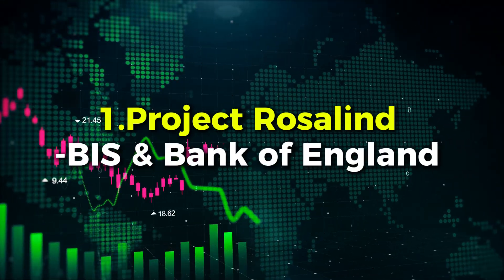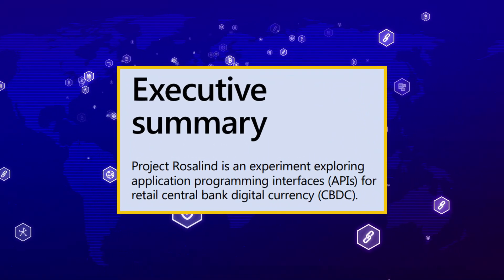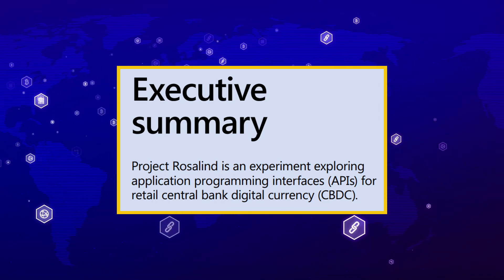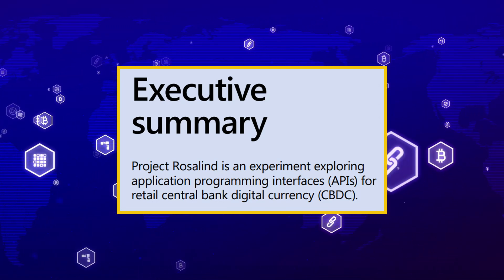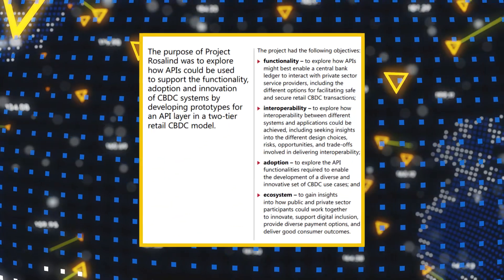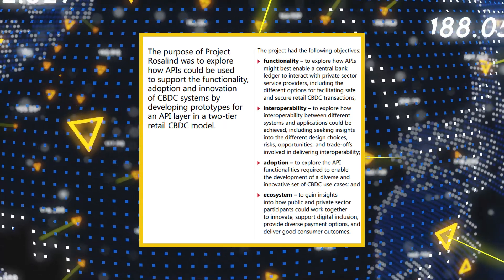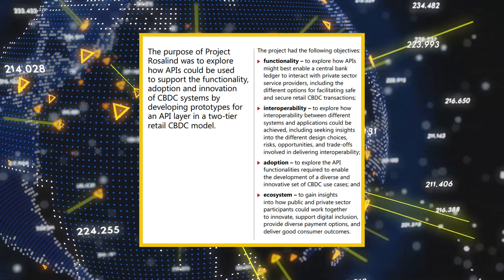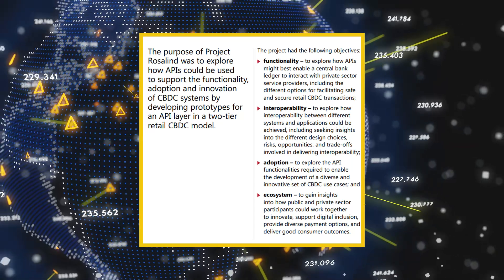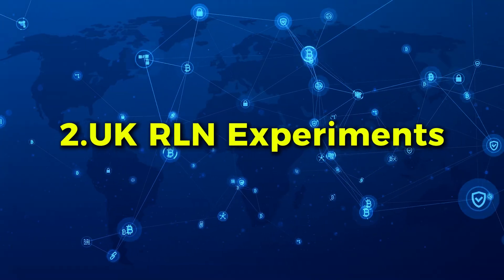First — Project Rosalind with BIS and the Bank of England. Project Rosalind explored a retail CBDC with a two-tier model and API layer to let the private sector build wallet and payment apps safely. Overledger was used in ledger API simulations to test designs across multiple ledger types, illustrating Overledger's role as API plus orchestration above different ledgers.